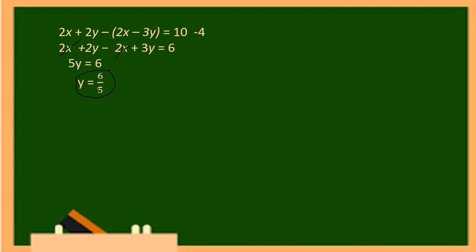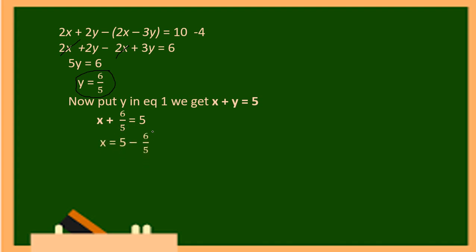Now we substitute this value of y into one of the original equations to find x. Taking equation 1: x plus y equals 5. Substituting y equals 6 upon 5: x plus 6 upon 5 equals 5. Transposing 6 upon 5 to the right-hand side, it becomes negative: x equals 5 minus 6 upon 5. Taking LCM: x equals 25 minus 6 upon 5, which gives x equals 19 upon 5.